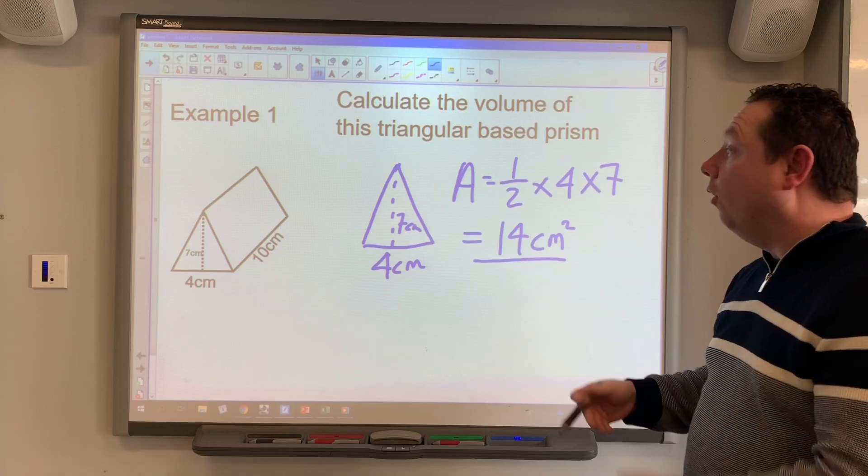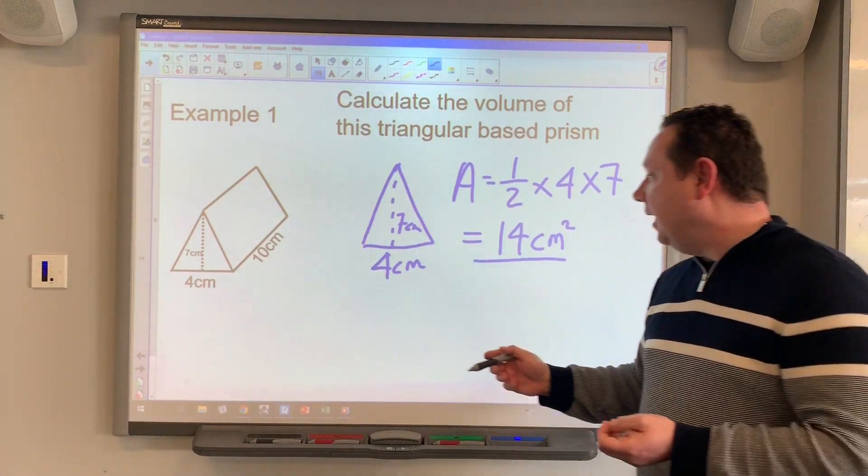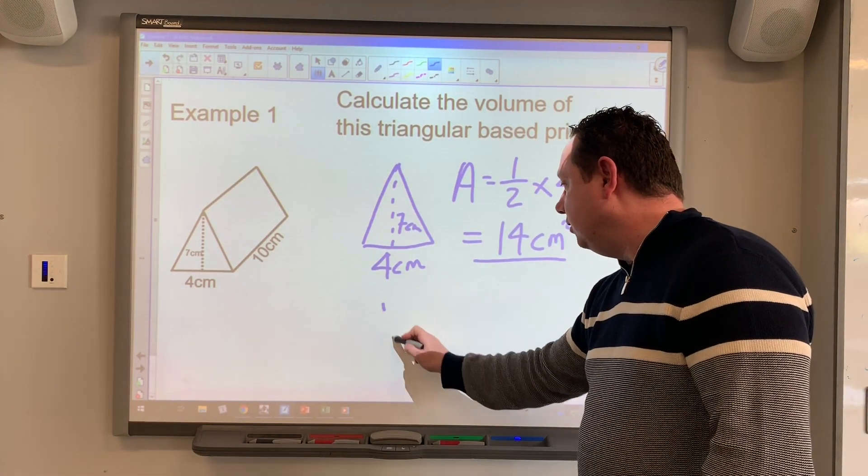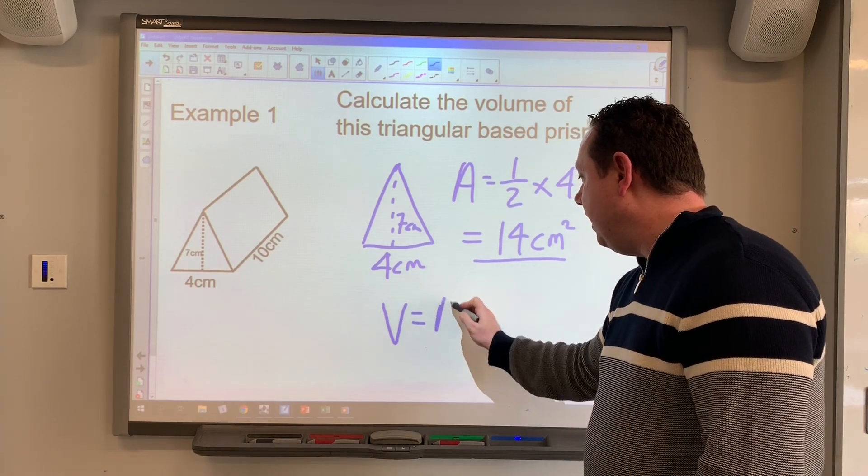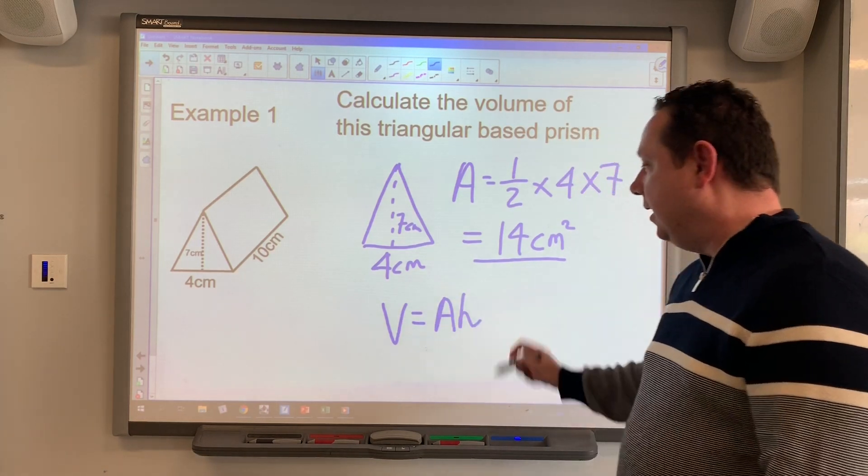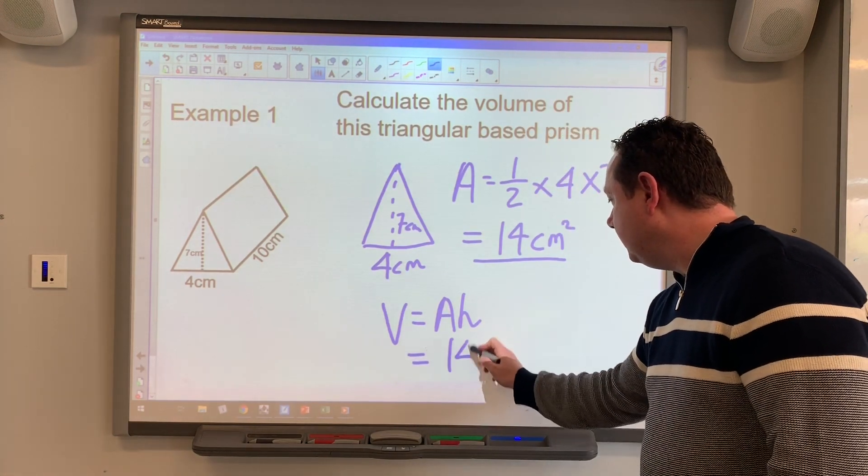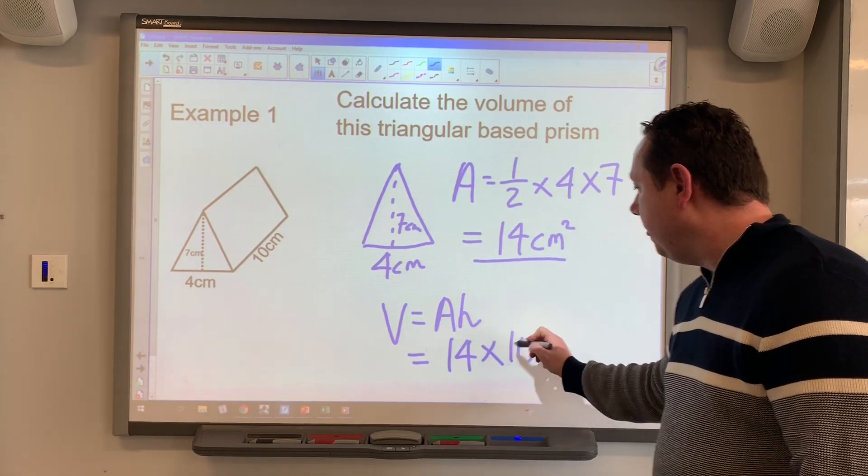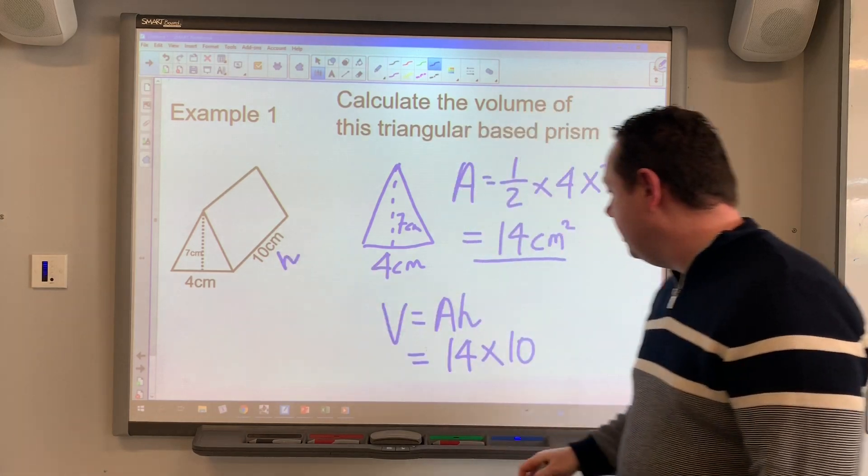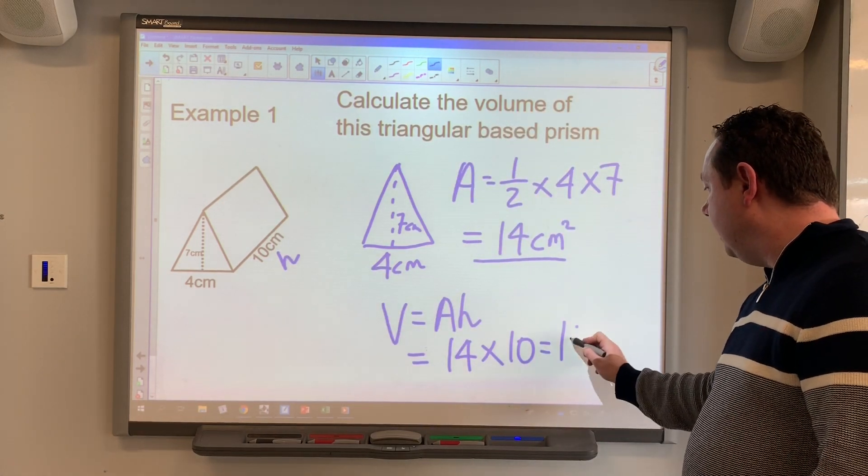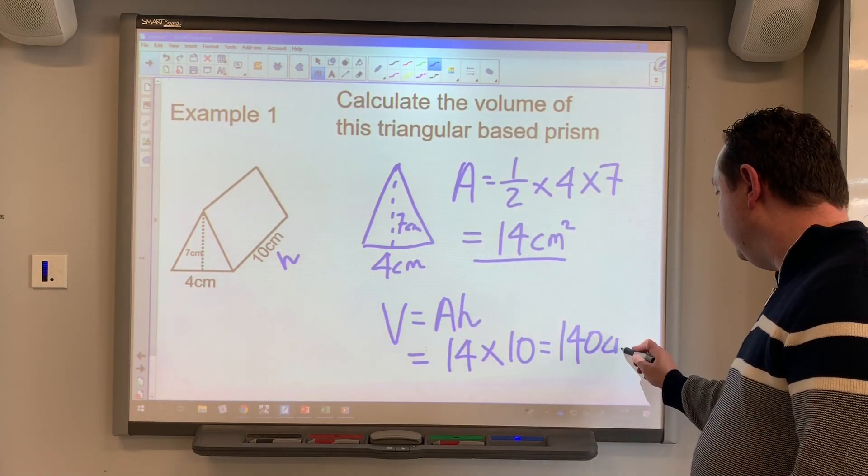So I've worked out the area of the shape which happens to be a triangle this time. Step two is exactly the same as it was yesterday as well. Volume is always area times vertical height. So I need to do 14 times 10 because there's my height H. 140 centimeters cubed.